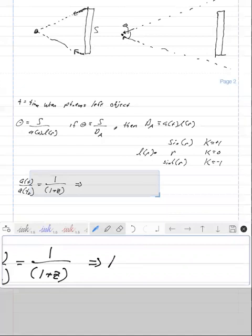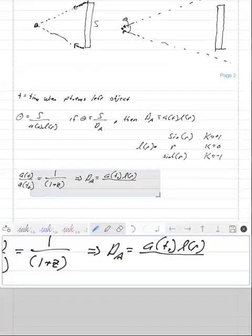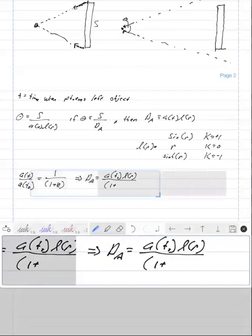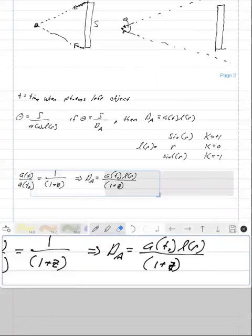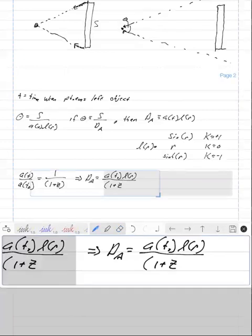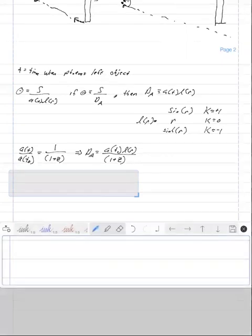So plugging this into D of A, we now have that D of A is equal to A of T naught times L of R divided by one plus Z. So that's the angular diameter distance.